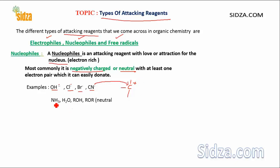Similarly, neutral molecules with lone pair electrons can also act as nucleophiles. For example, ammonia (NH3) has a lone pair, water (H2O) has two lone pairs, and alcohols and ethers — all these molecules can act as nucleophiles because they have electron pairs available to donate and can attack on an electron-deficient carbon.